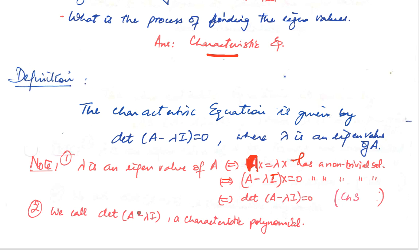Now, the determinant of A minus lambda I — that is, the left-hand side of the equation — is called the characteristic polynomial. Remember, a determinant is normally a number, but now it also has the variable lambda involved, so this becomes a polynomial of degree in lambda.